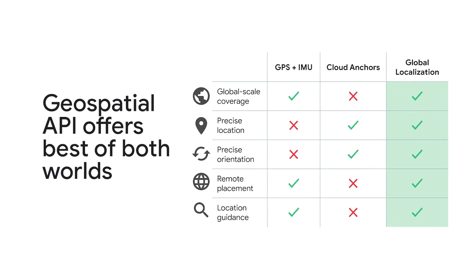Let's summarize the differences. With GPS, you get global scale with lower accuracy and variable reliability. With the Cloud Anchors API, you get high accuracy within a limited scale because you explicitly need to map a space. And with the Geospatial API, you get the best of both worlds — remotely placing content in the world and offering nearly ubiquitous accurate localization and heading without needing to manually map the space.